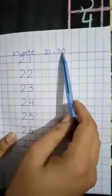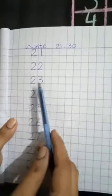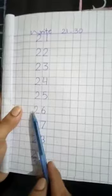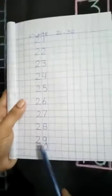Write 21 to 30. 21, 22, 23, 24, 25, 26, 27, 28, 29, 30. You have to write here at least 2 times. You will have to write 2 times here. Okay ji.